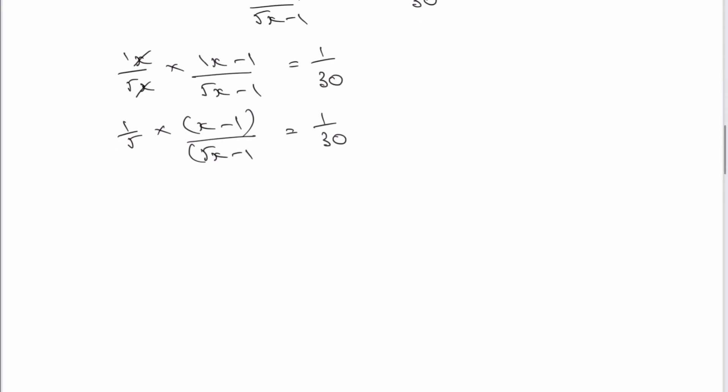OK, so I've got along the top, I've got 1 times x minus 1. Well, that's going to give me x minus 1. And on the bottom, I've got 5 times 5x minus 1. Well, that's going to be 25x minus 5, and that's going to equal 1 over 30.